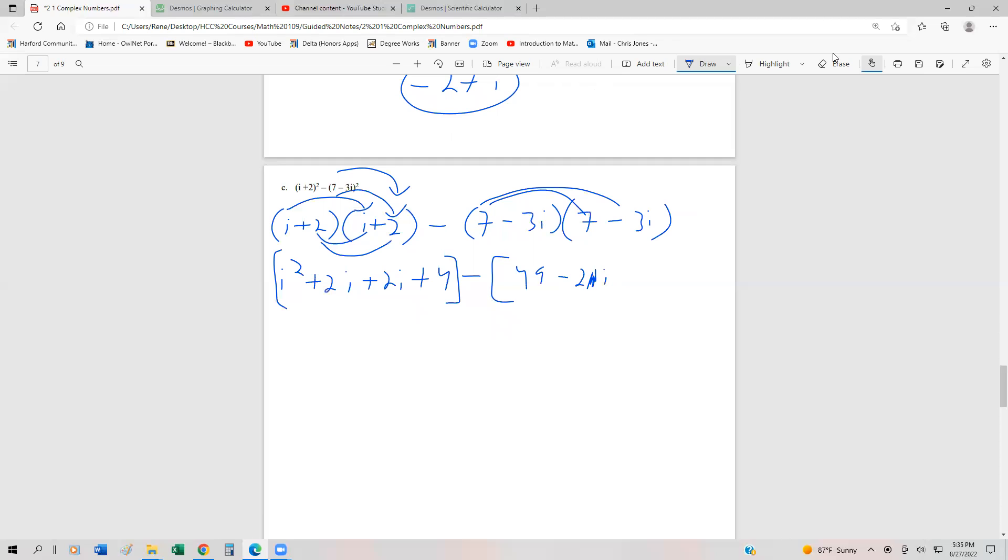7 times negative 3 is going to be negative 21i. That should be a 1 there. Then we're going to get another negative 21i from the inner terms. And finally, negative 3i times negative 3i is a positive 9i squared.